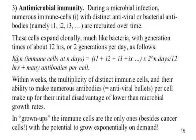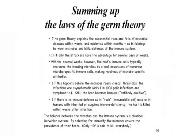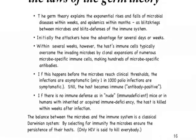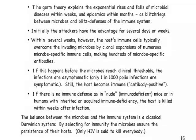Within weeks, the multiplicity of distinct immune cells and their ability to make numerous antibodies — antiviral or antibacterial bullets per cell — make up for the initial disadvantage of lower-than-microbial replication rates. Initially the blitzkrieg is won by the attackers — by the microbes replicating faster — but then the immune system catches up. In summary, immune cells are the only ones, besides cancer cells, with the potential to grow exponentially on demand. Summing up the laws of the germ theory: it explains the exponential rise and falls of microbial diseases within weeks, and epidemics within months, as blitzkriegs between microbes and defenses by the immune system — a little less rapid than the attack, but in time to save most of us. The host's immune cells typically overcome the invading microbes by clonal expansions of numerous microbe-specific immune cells making hundreds of microbe-specific antibodies each per day.